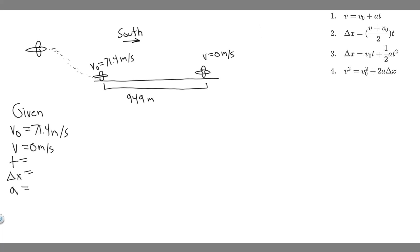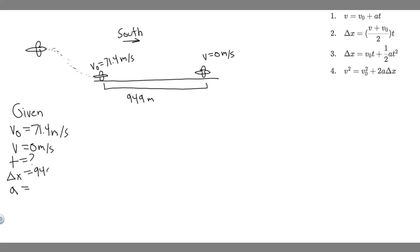Time is how long it takes, and we're not given that, so we mark it as unknown. Delta x is the change in position — the jet travels 949 meters in the positive (south) direction, so delta x equals 949 meters. Acceleration is what we're solving for, so a equals question mark. We're given three variables: v sub zero, v, and delta x, and we're solving for a.